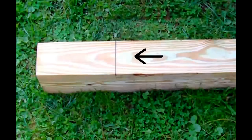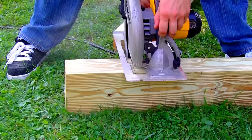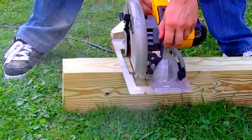Next, set your circular saw's depth to 1 inch. Run your saw through the line. You should now have a 1-inch deep notch in your top piece.